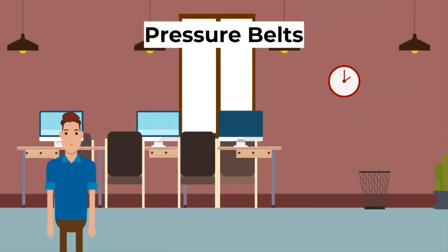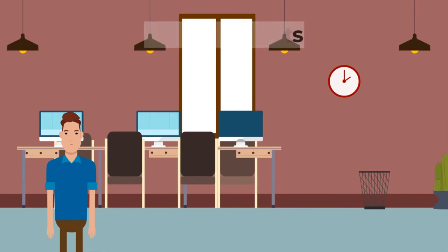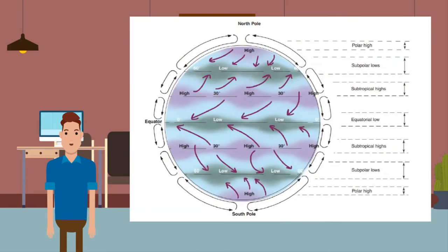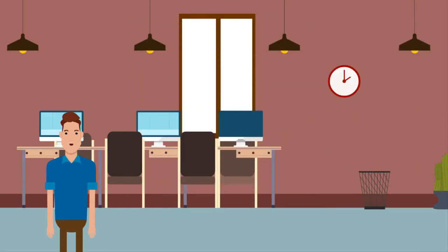Next, let's look at pressure belts. These air circulations create different areas of pressure. When air rises it creates an area of low pressure underneath; when air sinks it creates an area of high pressure. One way to remember these patterns: when air is sinking there are more air particles pushing downwards, meaning higher pressure. In contrast, if air is rising, the pressure will be lower as the air particles aren't pushing down.